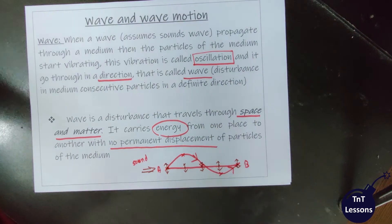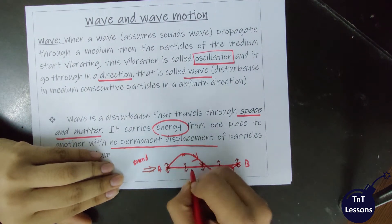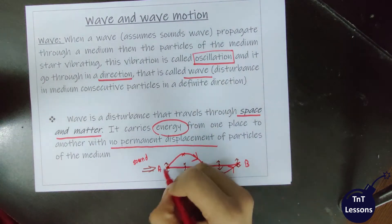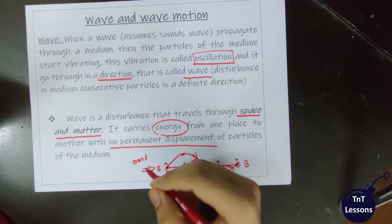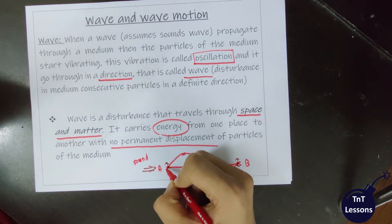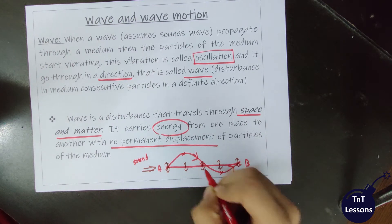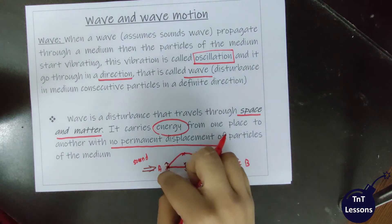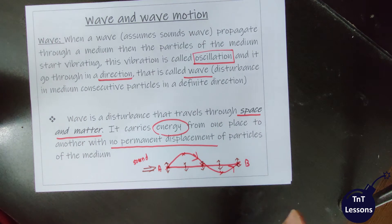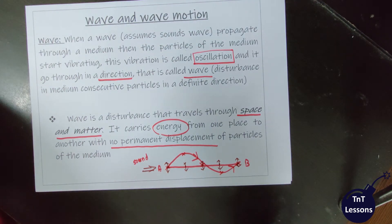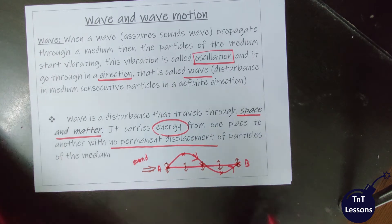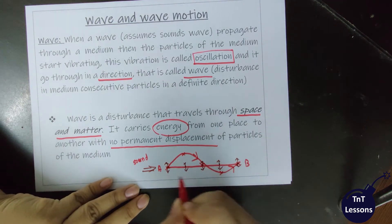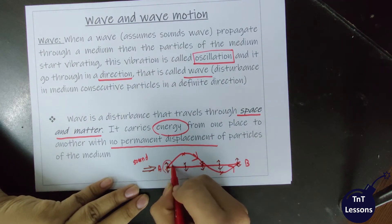The wave travels on the medium. As the wave reaches the top position, the displacement of the particles in the medium is a temporary displacement. So, if you think about it, there are two different movements: one is an energy movement, and the other is a particle movement.